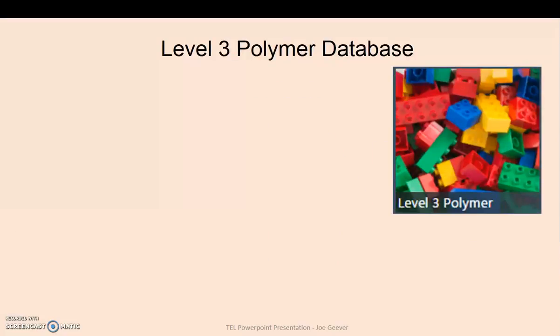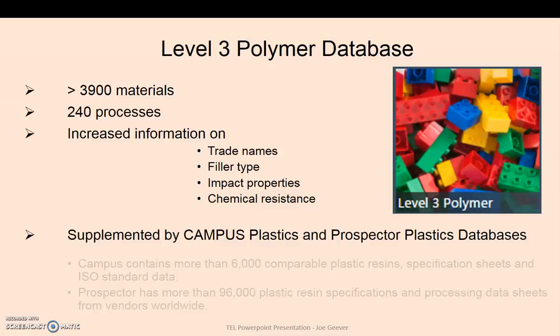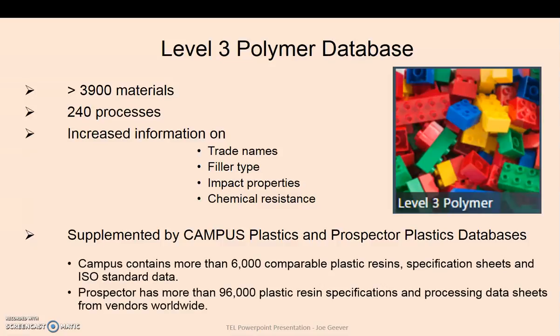What's in the Level 3 polymer databases? Well, 3900 materials, 240 processes, and lots of increased information on trade names, which is important for their impact properties and chemical resistance. And then we also have it supplemented by the Campus Plastics and Prospector Plastics databases.